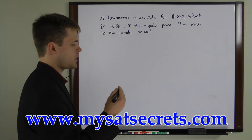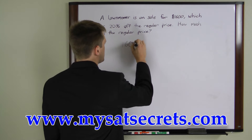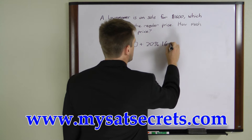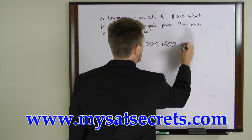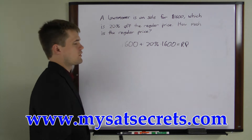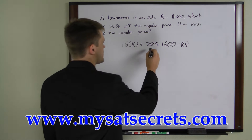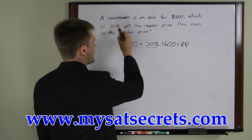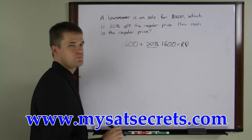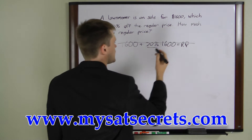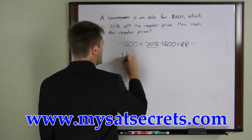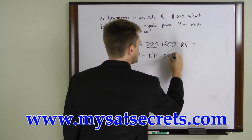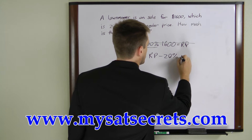For instance, if you write this as $1600 plus 20% times $1600 equals the regular price, you'll get the wrong number. That's because you'd be taking 20% of the sale price instead of 20% of the regular price, like the question states. What you want to write instead is: $1600 equals the regular price minus 20% of the regular price.